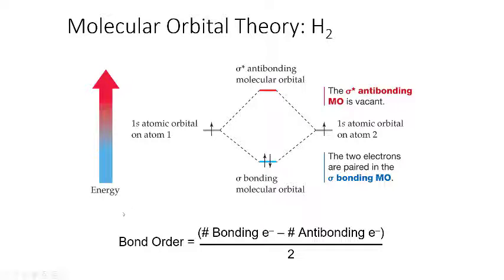The bond order — the number of total bonds — can be one for a single bond, two for a double bond, or three for a triple bond. The equation for bond order using molecular orbital theory is: number of electrons in bonding orbitals minus electrons in anti-bonding orbitals, divided by two. For H2, we have two bonding electrons minus zero antibonding electrons, giving two divided by two equals a bond order of one, indicating a single sigma bond, which is what we see for H2.